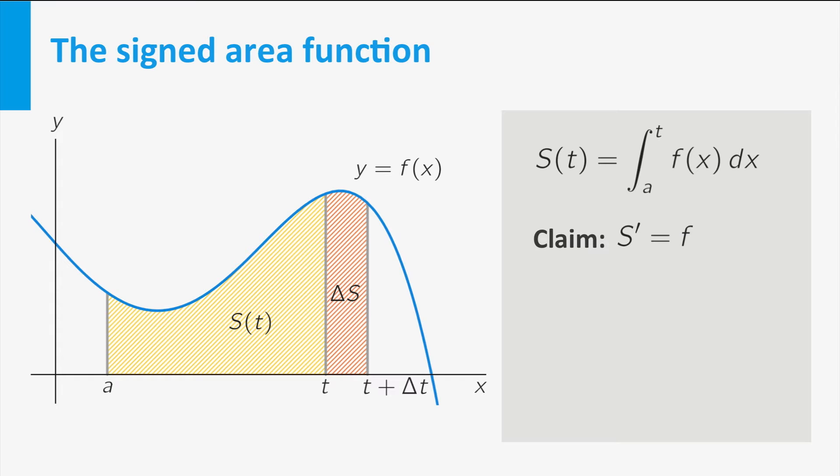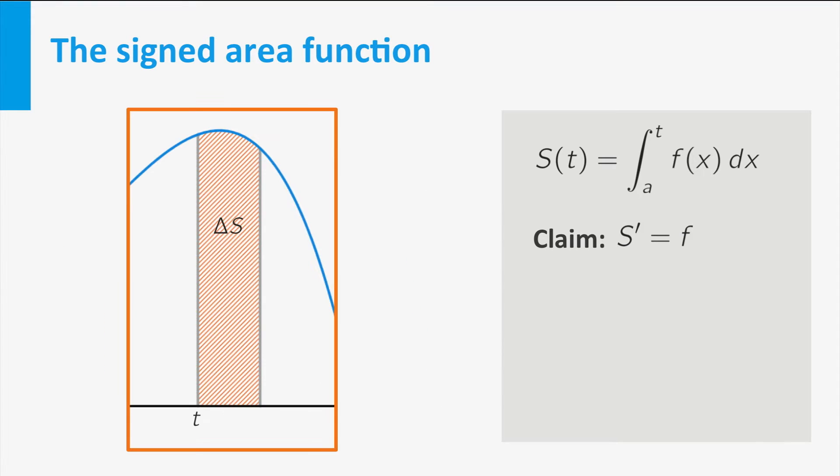Now delta s is precisely the area of the small strip in the picture. Let's zoom into this strip. If delta t is small, then the strip is roughly equal to a rectangle with width delta t and height f of t. So delta s is approximately equal to f of t times delta t.